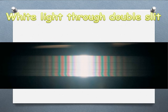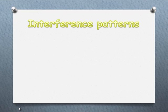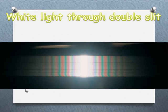When you shine white light through double slits, you get bands of coloured light. This is because different colours have different path lengths for red, blue, and green, so constructive interference occurs at different positions for each wavelength.